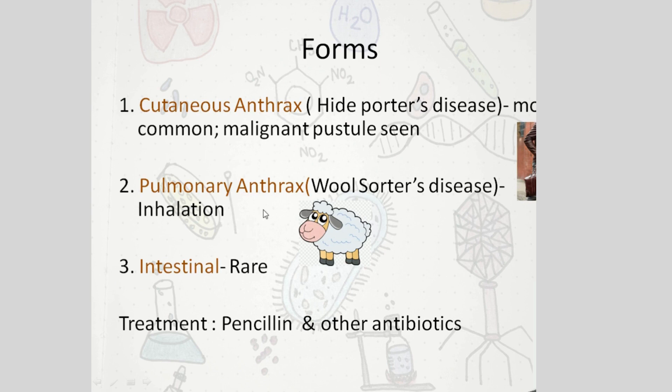The second form is pulmonary anthrax, also called the wool sorter's disease. Wool comes from sheep, so people who sort the wool get this through inhalation of the spores. Third is intestinal anthrax, which is a very rare form. Treatment is using penicillin and other antibiotics.